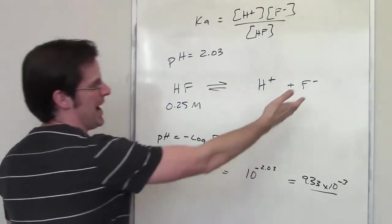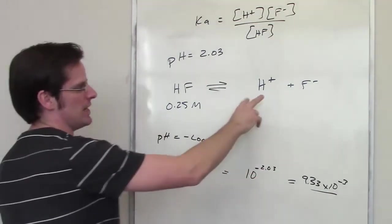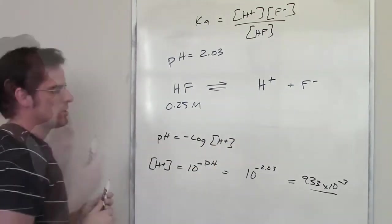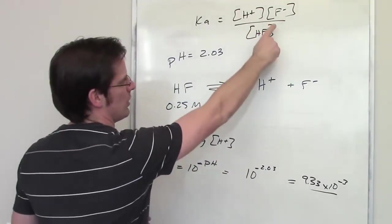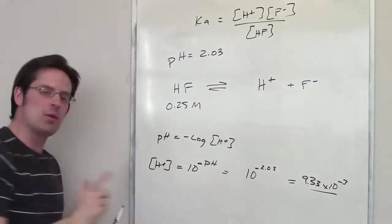The concentration of F- at equilibrium is presumably the same because they're present in a one-to-one stoichiometric ratio. So I can take those numbers and throw them up here. But what is the concentration of HF going to be at equilibrium?